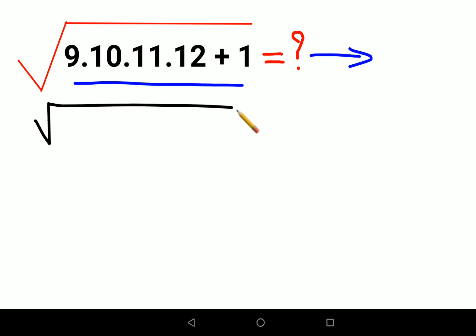Here what you should do is you club 9 and 12. That gets you 108 into 11 into 10, which gets you 110 plus 1. Now if you look closely between these two, there is one number which is 109.